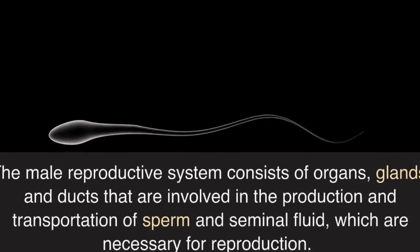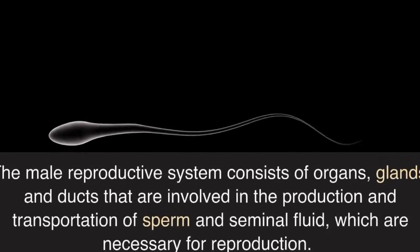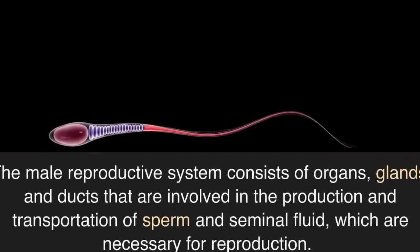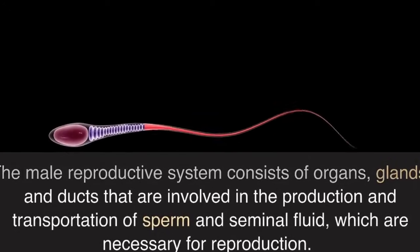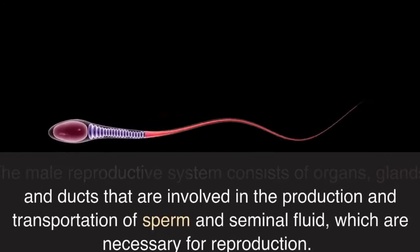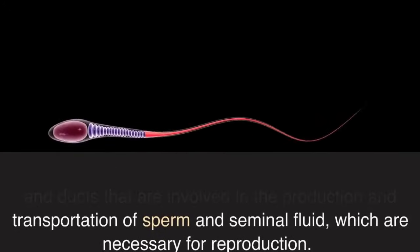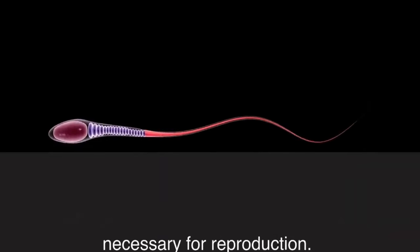The male reproductive system consists of organs, glands, and ducts that are involved in the production and transportation of sperm and seminal fluid, which are necessary for reproduction.